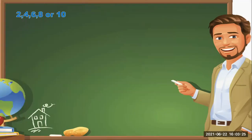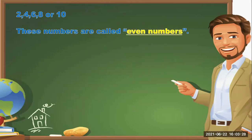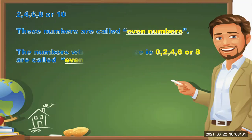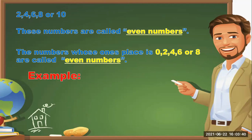Two, four, six, eight, or ten — these numbers are called even numbers. The numbers whose ones place is zero, two, four, six, or eight are called even numbers.